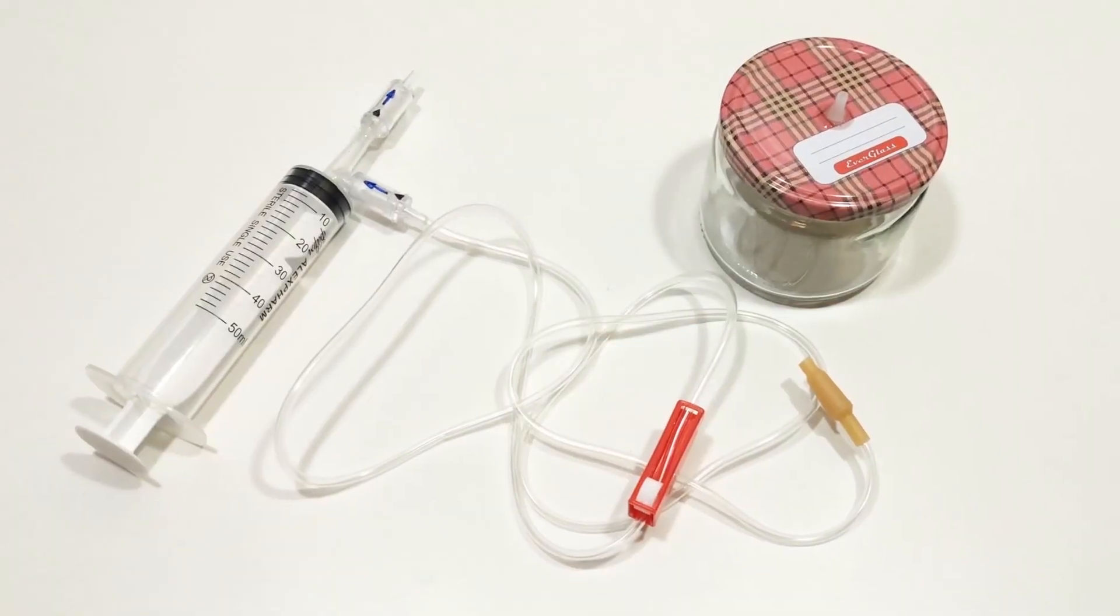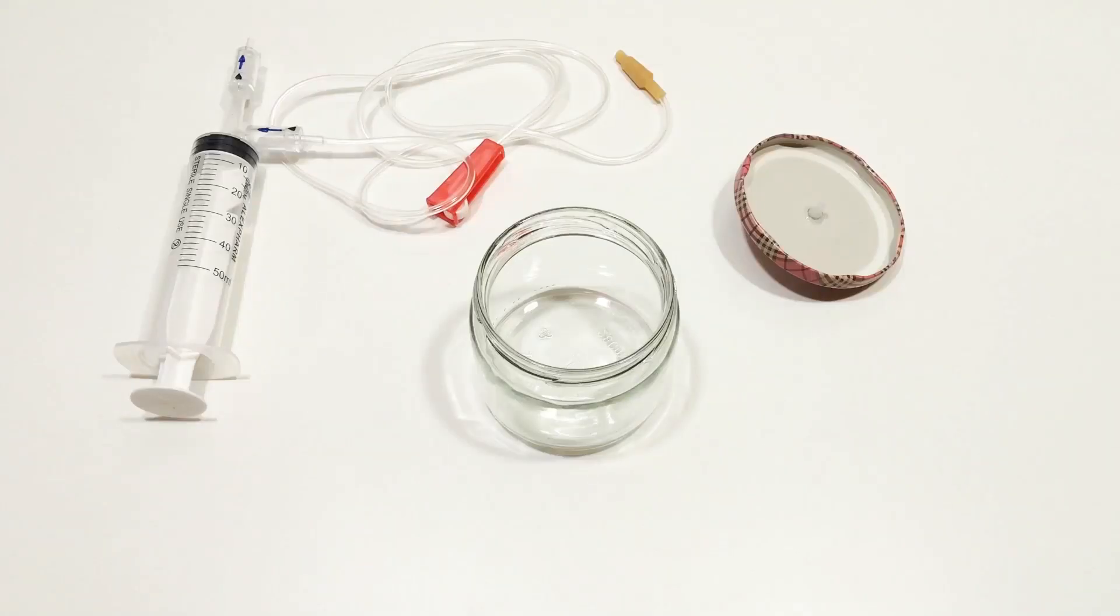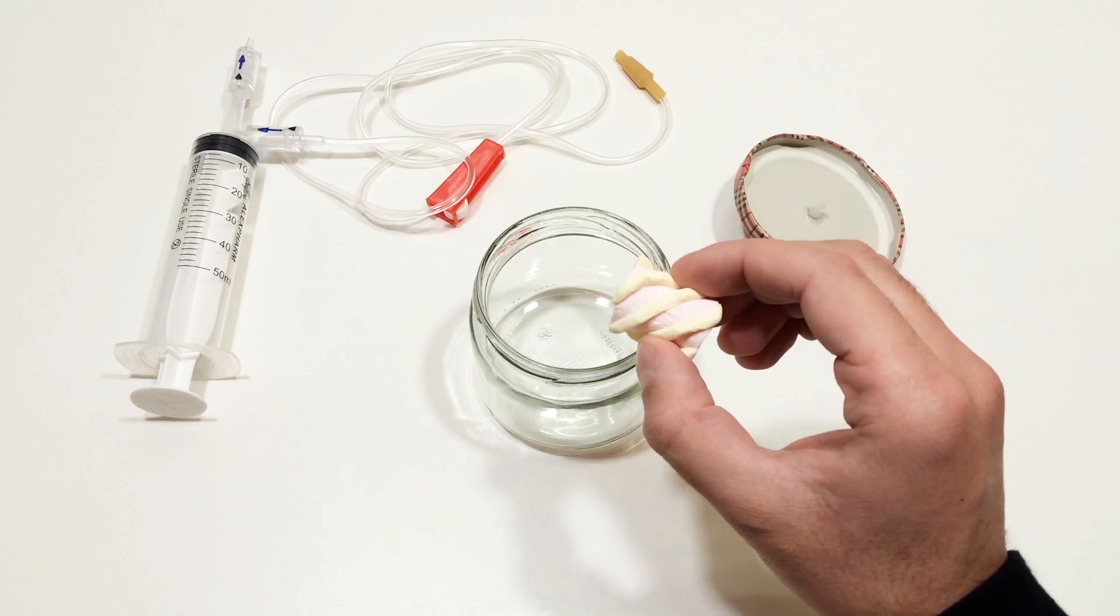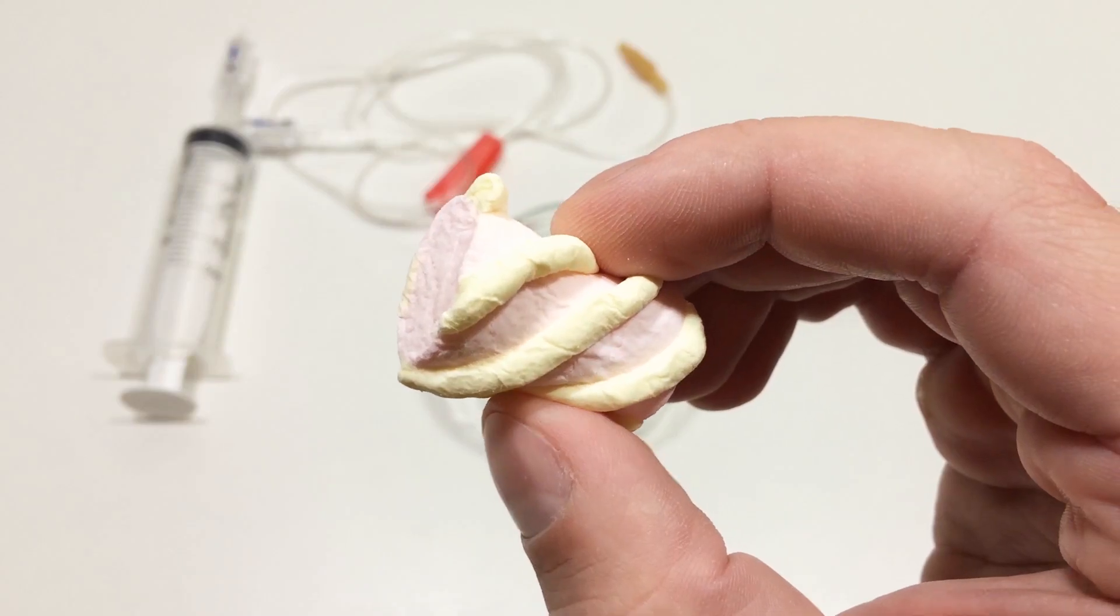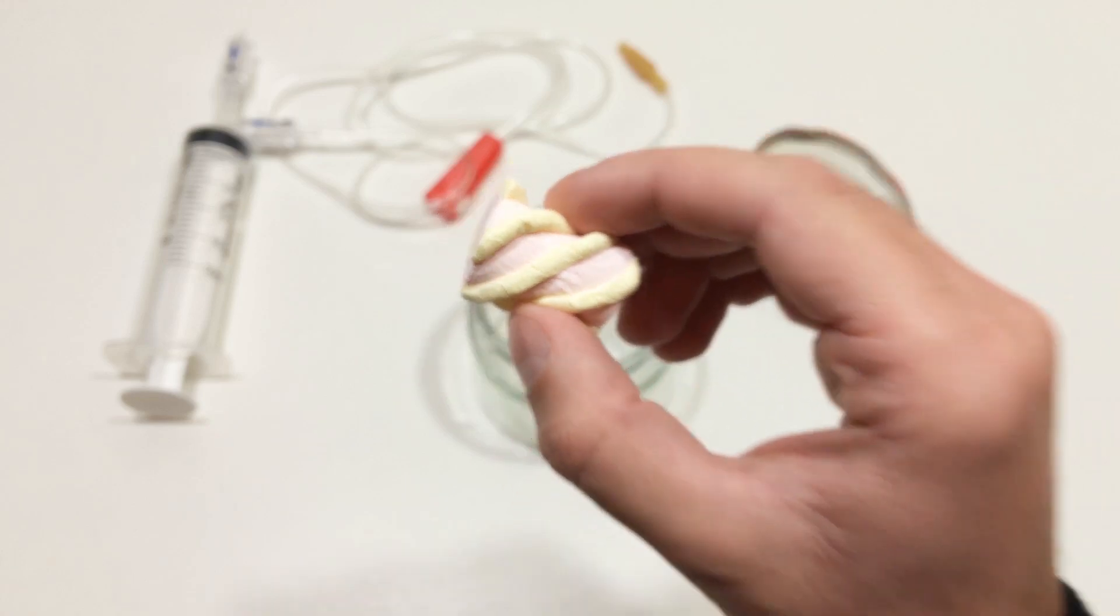Time to run some tests. Connect the tubing from the pump to the lid fitting. Start pulling the plunger and the air starts getting sucked out. The pressure inside drops. And now we've got a working vacuum.